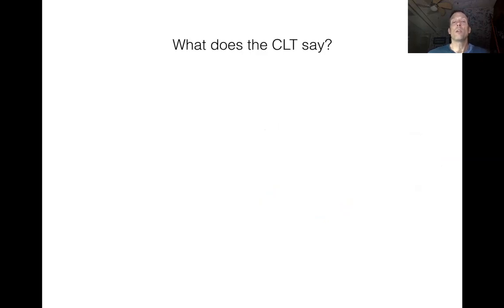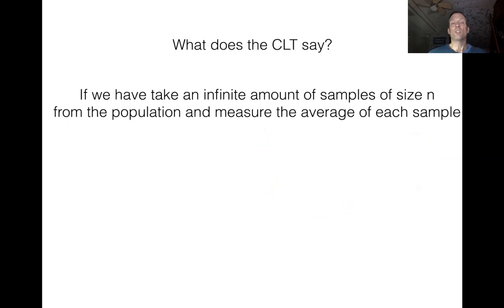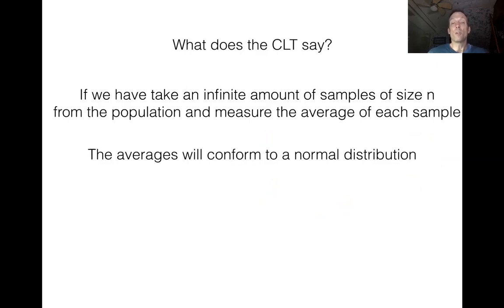So what does the Central Limit Theorem actually say? The first thing it says is if we were to take an infinite number of samples of the same size from the population, and for each sample we take the average of whatever we're recording — maybe the average amount of chocolate bars somebody eats in one year — it's going to turn out that those averages will conform to a normal distribution. It doesn't matter what the original data looks like; the averages are always going to end up approximately normally distributed.